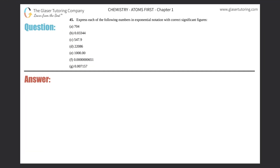Number 45: express each of the following numbers in exponential notation with correct significant figures. We've got A through G, so join me for all of them. Exponential notation is the same thing as scientific notation.